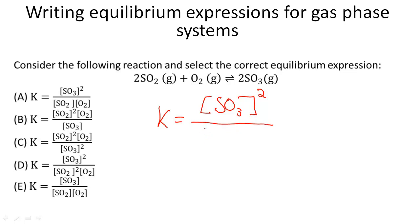We're going to now move to the reactants, which are going to be on the bottom. So we're going to have SO2 squared because that's the coefficient of SO2, and then O2, and we see that it has